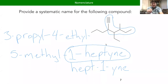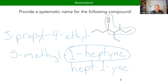If the alkyne is on carbon one, do we have to put the one? Yes, unless there's only one possible option for where it could be. So if you have propyne, it has to be between carbon one and two — it's the same spot either way. If that's the case, you don't need to say the number. Same for things like methylpropane — you don't say 2-methylpropane because there's only one place for the methyl group to go.